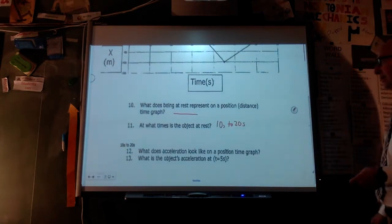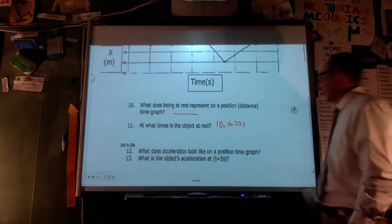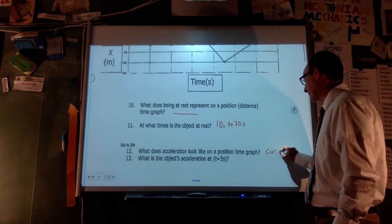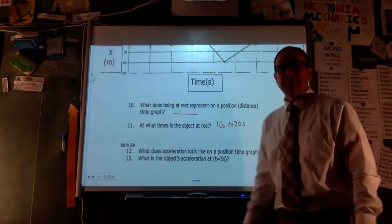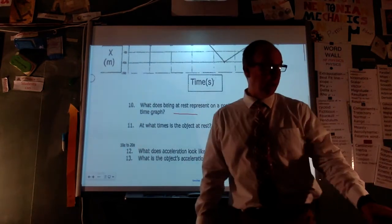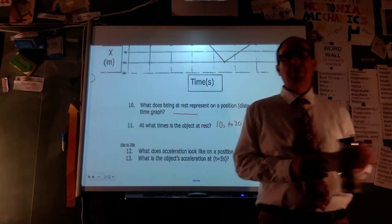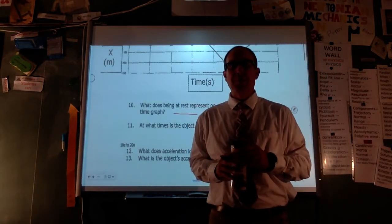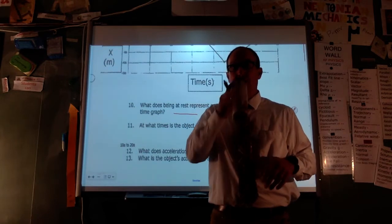What does acceleration look like on a position-time graph? It's going to be a curve. You'll have to draw this on the last part of the test — drawing acceleration, similar to what you did with the parachuter problem.